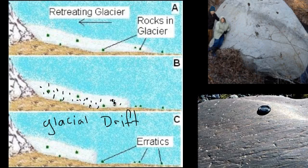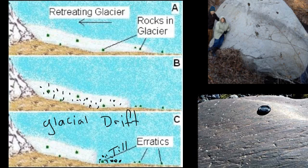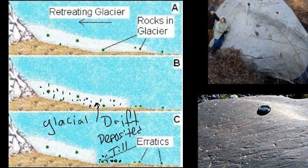Eventually this glacier melts, and you get a pile of glacial drift deposited all over the ground — that's called till — T-I-L-L. Till is deposited glacial sediment. Glacial drift is stuff being carried by the glacier, and till is what gets deposited after the glacier melts. An erratic is a single large boulder carried in from somewhere far away.